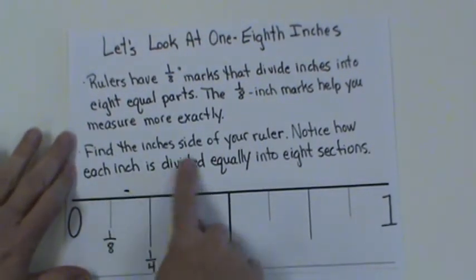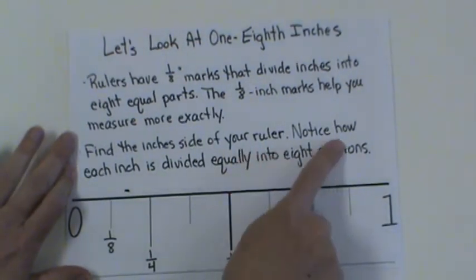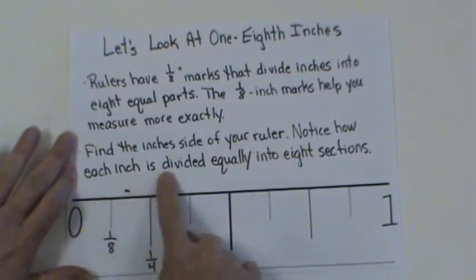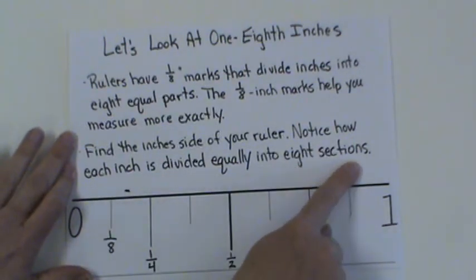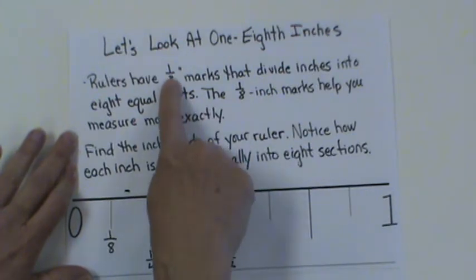Find the inch side on your ruler and you can see how each inch is divided equally into eight sections. We're working with fractions, so we know it has to be eight equal-size pieces.